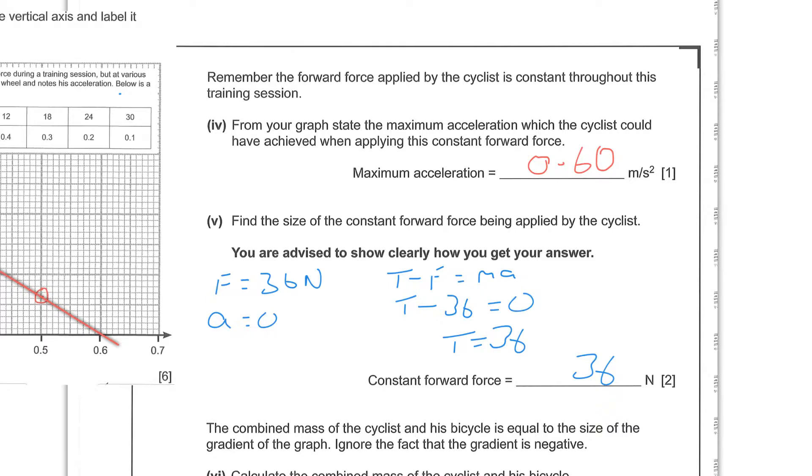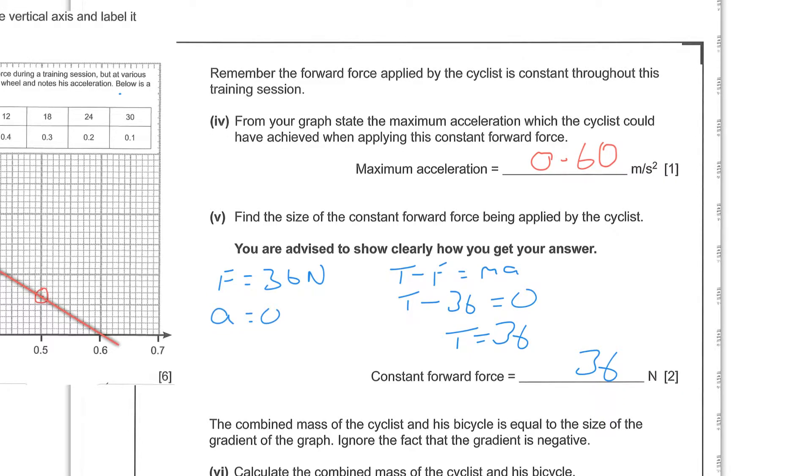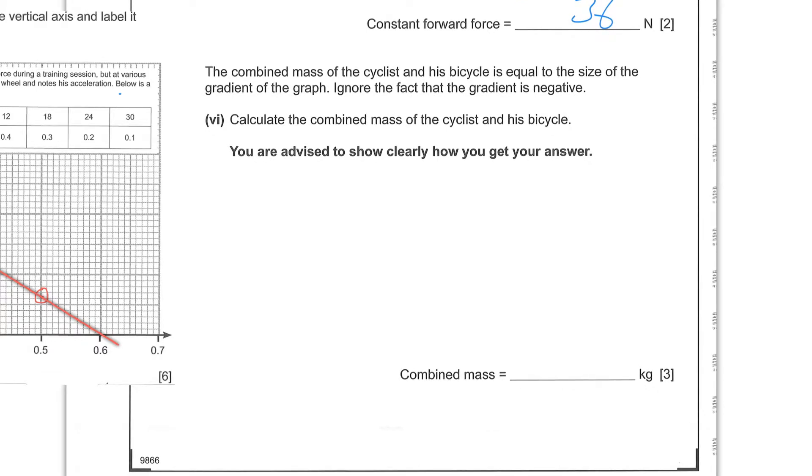And that makes sense because if these two forces are fighting to cause acceleration, when they balance you won't get any acceleration. The combined mass of the cyclist and his bicycle is equal to the size of the gradient of the graph. Ignore the fact that the gradient is negative. Calculate the combined mass of the cyclist and his bicycle. You're advised to show clearly how you get your answers.